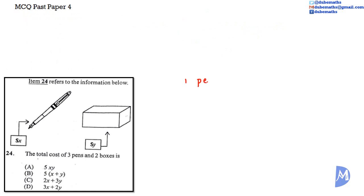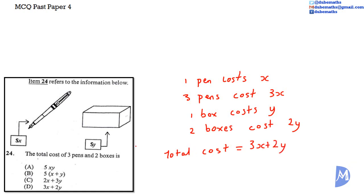One pen costs X. Thus, 3 pens cost X by 3 or 3X. 1 box costs Y, thus 2 boxes cost Y by 2 or 2Y. The total cost is equal to 3X added to 2Y. The answer is D.